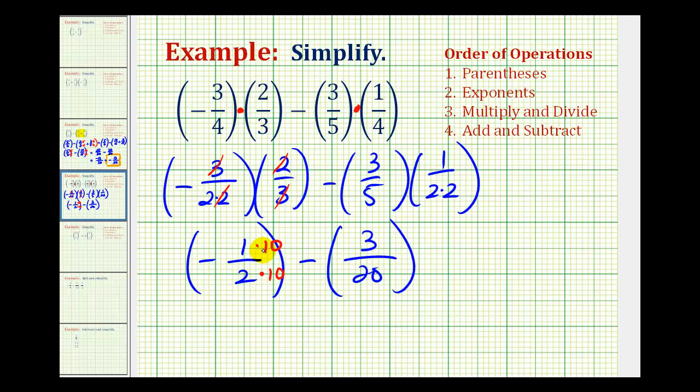So this would be negative ten-twentieths. Remember if it's helpful you can put the negative sign in the numerator. And that is often helpful when adding and subtracting. And then instead of minus a positive three-twentieths I'm going to write plus a negative three-twentieths. Remember subtracting a positive is equivalent to adding a negative.